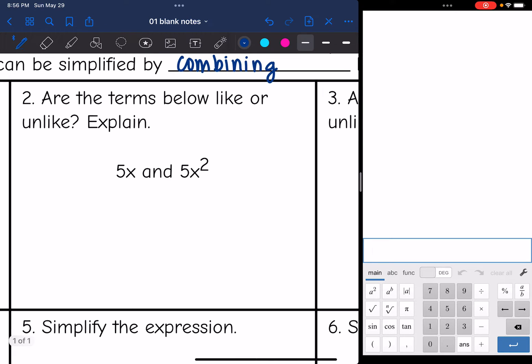All right, are these terms below like or unlike? These are definitely unlike. 5X and X squared are unlike because they have different exponents. They have to have the same variable base and the same exponent to be like terms.